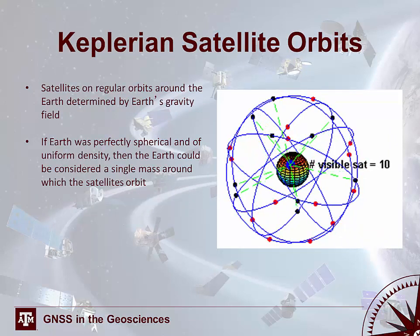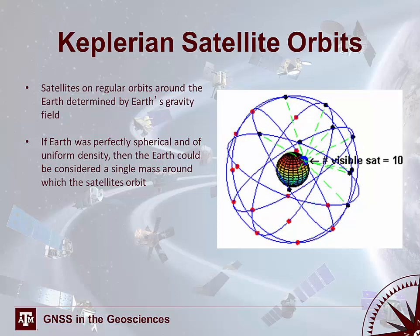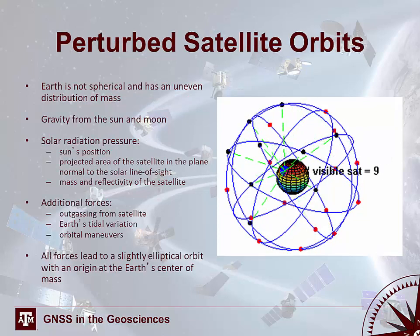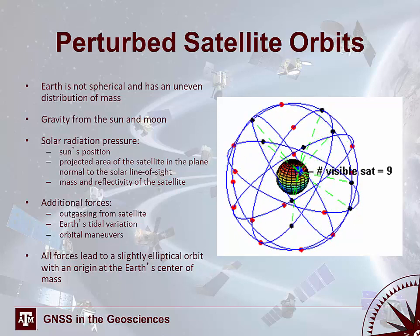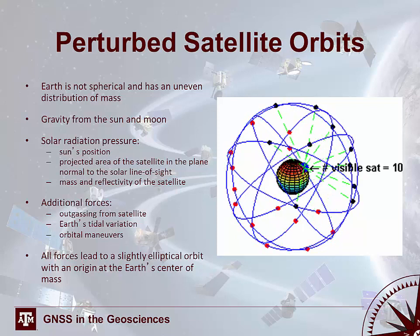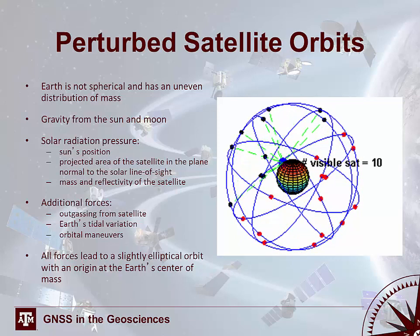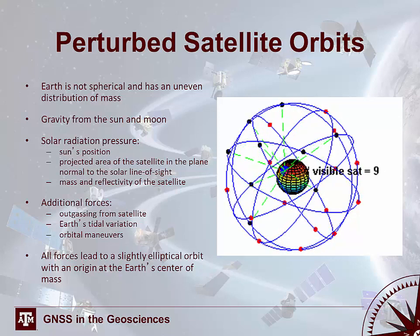Ideally, satellites travel on Keplerian orbits determined by Earth's gravitational field. If the Earth were perfectly spherical and of uniform density, we could treat it as a single mass. However, the Earth isn't perfectly spherical and doesn't have an even mass distribution, so there's an uneven gravitational field, plus gravity from the sun and moon, solar radiation pressure, outgassing from satellites, tidal variations, and orbital maneuvers — all leading to a slightly elliptic orbit centered on Earth's center of mass.